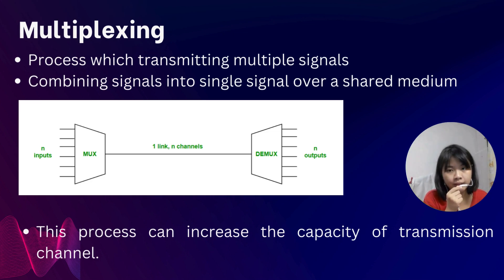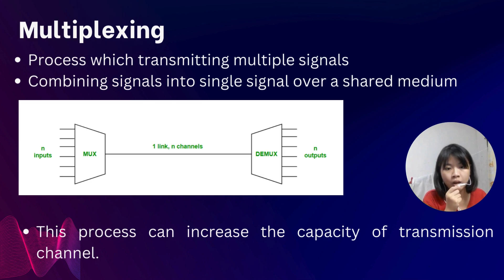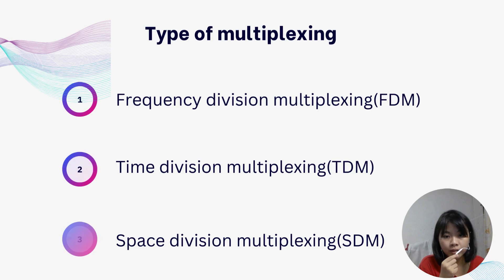Now I will be talking about multiplexing. Multiplexing is a process of transmitting multiple signals and combining them into a single signal over a shared medium. As you can see in the picture, there are a few inputs that are combined into one. This process can increase the capacity of a transmission channel.